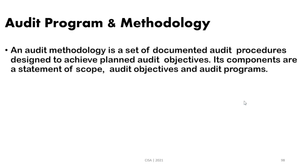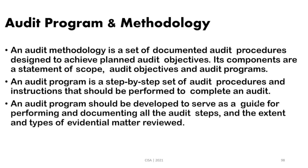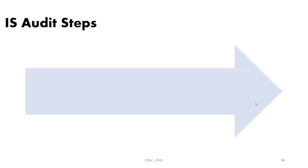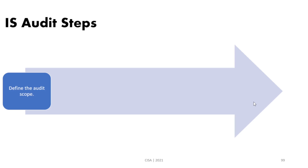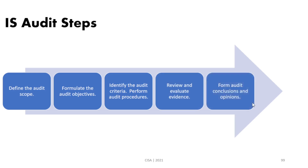Audit methodology is the documented audit procedures designed to achieve the audit objective. It includes a statement of scope, audit objectives, and the audit program. The audit program is a step-by-step set of procedures and instructions that should be performed to complete an audit, and should be developed to serve as a guide for performing audit activity. The IS audit steps are: define scope, formulate objective, identify audit criteria, perform audit procedures, evaluate evidence, form conclusion, and report to management.